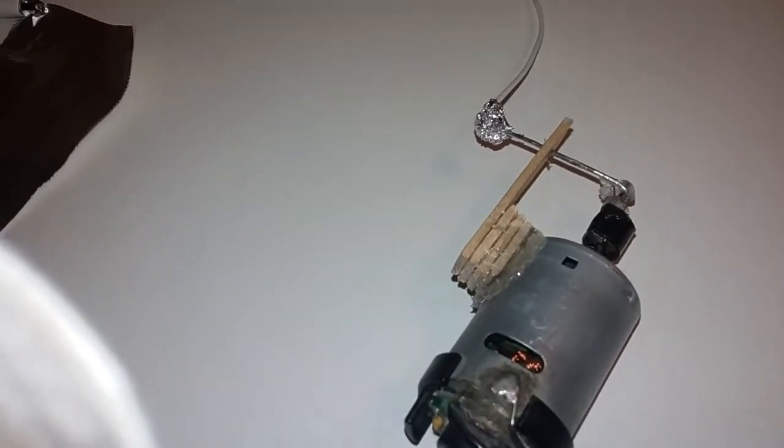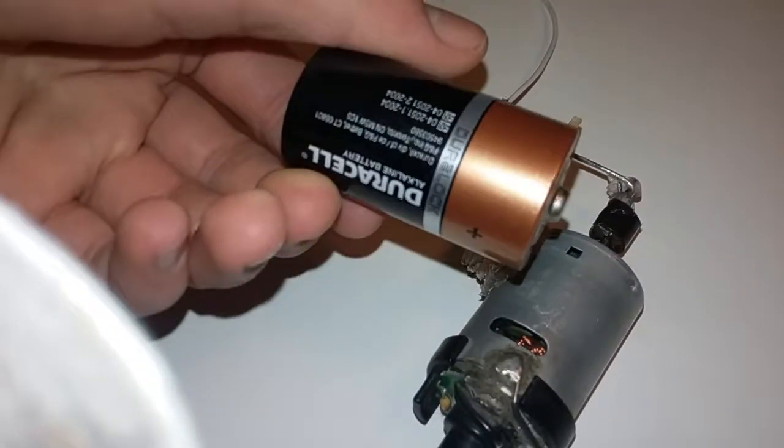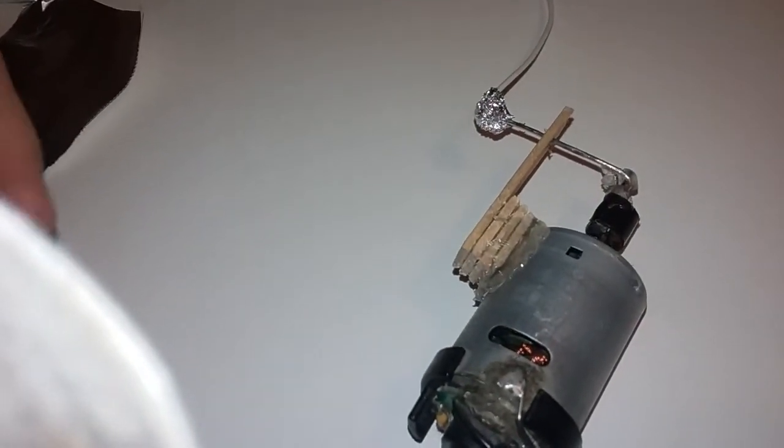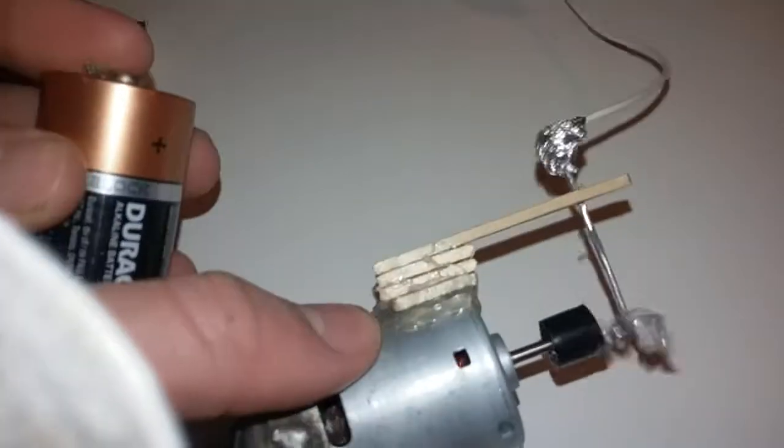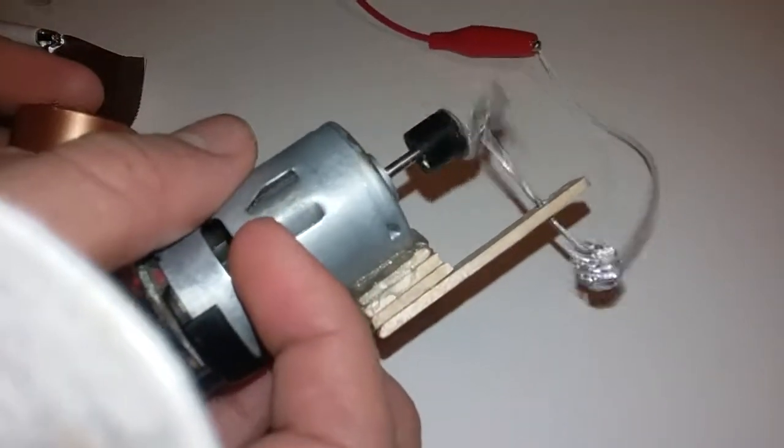Now that the aluminum foil is wrapped around the end of the clicker, I'll put it in a C cell battery. So I'll put the two terminals of the DC battery. As you can see, it can go back and forth.